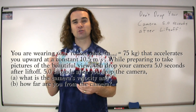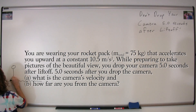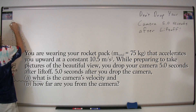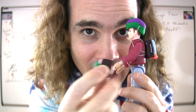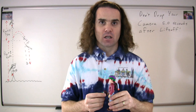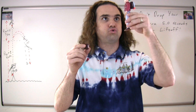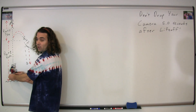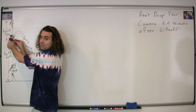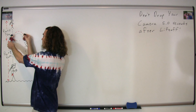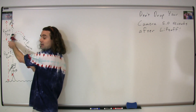Before we translate the problem this time, I'm actually going to draw a picture first to help us understand the problem. Notice your rocket pack, your camera, and of course your safety helmet — very important safety helmet. You start out on the ground holding the camera and you fire your rockets. Five seconds after you fire your rockets, you drop your camera. The camera continues to move upward and then falls back downward, and you continue to move up because your rockets are still going.